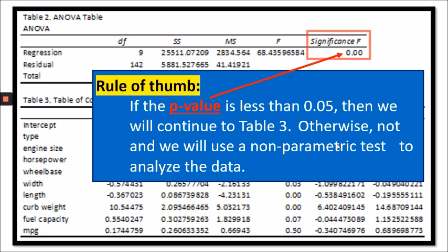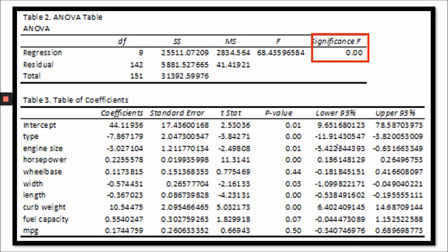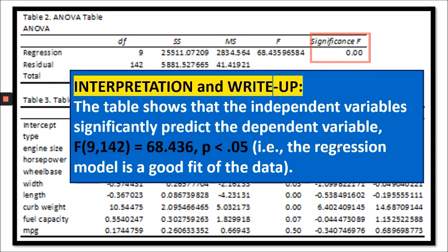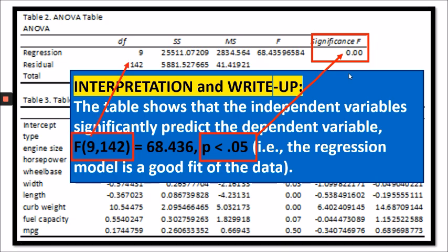To come up with a write-up for this interpretation, we can use this statement: 'The table shows that the independent variables significantly predict the dependent variable.' We justify this by adding information from Table 2 — the p < 0.05 comes from the Significance F column, F(9,144) came from the degrees of freedom, and the value 68.436 came from the F-value.